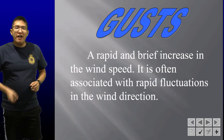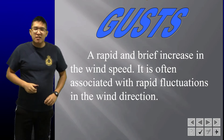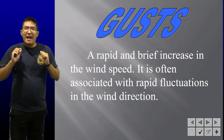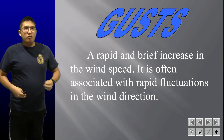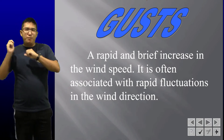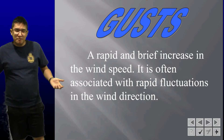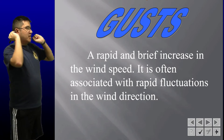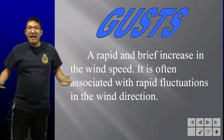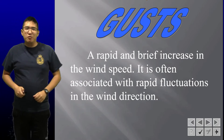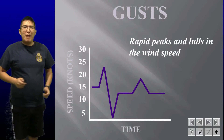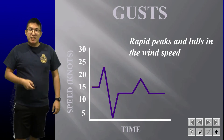Gusts are a rapid and brief increase in wind speed, often associated with rapid fluctuations in wind direction. If you've been outside on a very windy day and suddenly the wind just picks up and then stops — that's a gust. Gusts can also change direction; winds coming from the west might randomly shift to coming from the east and then back. You need to be careful with gusts, especially when you're close to the ground.